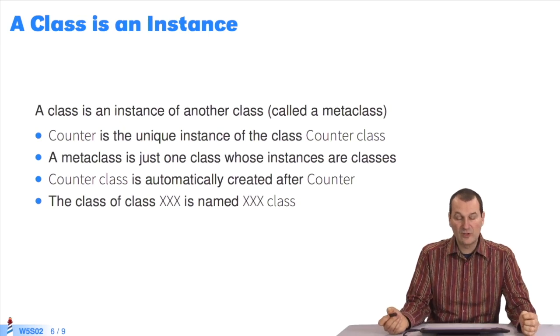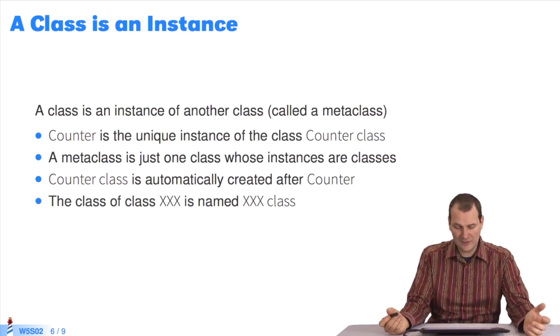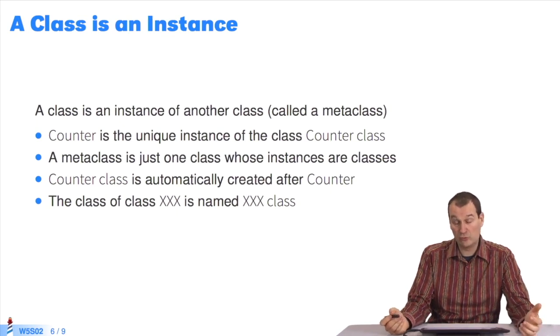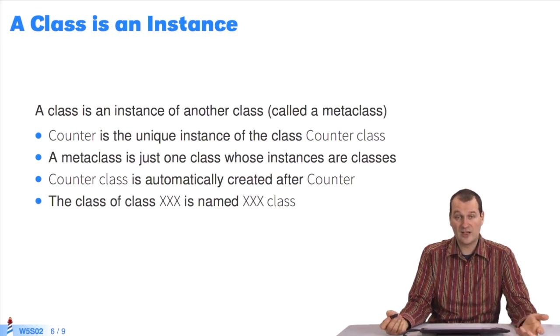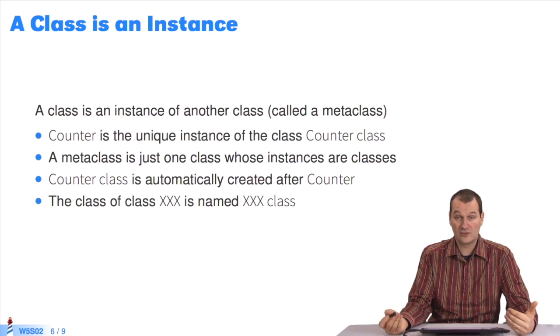So we used exactly the same process as for the messages we sent to an instance of the counter class. So what is a class in Pharo? A class is an instance. It's an object like any object. In Pharo, there are only objects. A class is an instance of another class, called a metaclass. It's just to distinguish them. A metaclass is just a class whose instances are classes, to differentiate between terminal instances and classes.